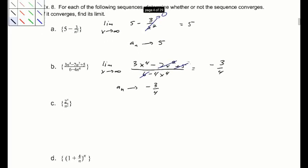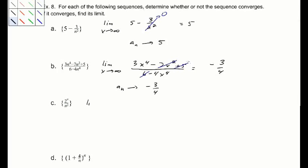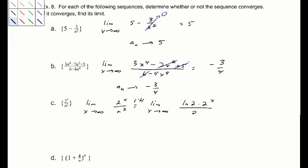Part C: take the limit as x goes to infinity of 2^x over x squared. Both go to infinity, so we apply L'Hôpital's rule — this is an indeterminate form. Applying it gives the natural log of 2 times 2^x over 2x, which is still going to infinity.